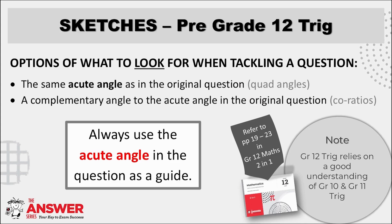First, let's look at what options to look for when tackling a Sketches question. The tools we have available for reduction are quad angles and co-ratios, and so these are the angles we must be on the lookout for, always with reference to the acute angle given in the question.